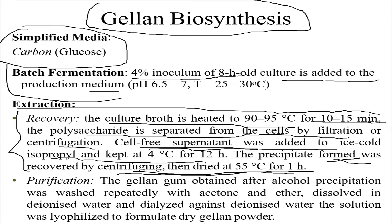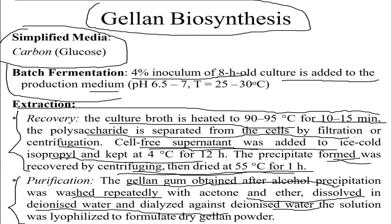For purification, the gellan gum obtained after alcohol precipitation is washed repeatedly with acetone and ether, then dissolved in deionized water and dialyzed against deionized water. The solution is lyophilized to produce dry gellan powder. This alcohol precipitation-based purification step is broadly similar across different EPS types.